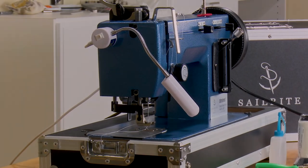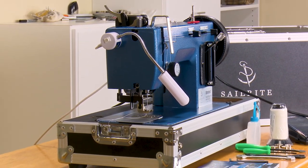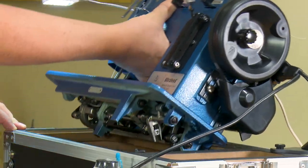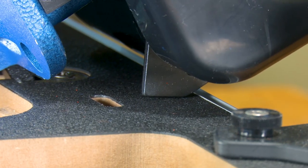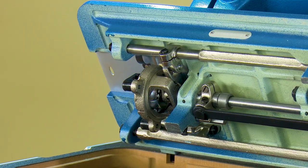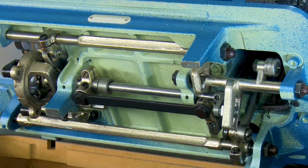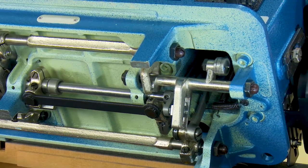The LSZ1 Plus Package comes with the industrial carrying case. Tilt the LSZ1 head back and it rests in a balanced position for maintenance. Take a look at the heavy duty metal components that help make the Ultrafeed the world's best portable walking foot sewing machine.